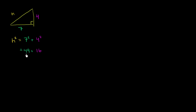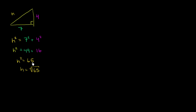49 plus 10 is 59, plus 6 is 65. So h squared is equal to 65. If we take the square root of both sides, h is equal to the square root of 65. We really can't simplify this — 65 is 13 times 5, both are primes and not perfect squares, so you can't simplify this anymore. So h is equal to the square root of 65.